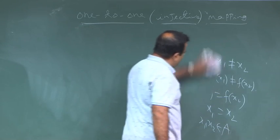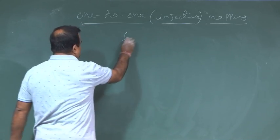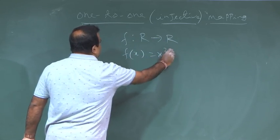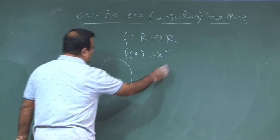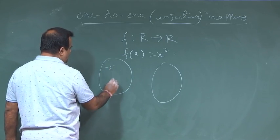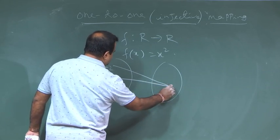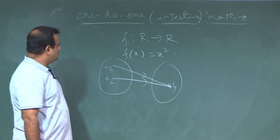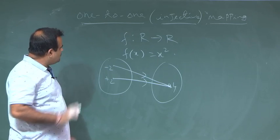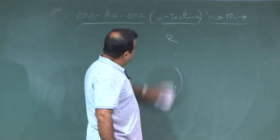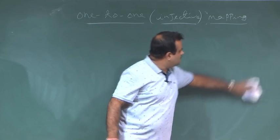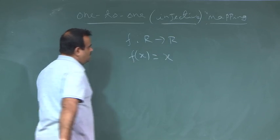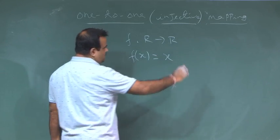The function f: ℝ → ℝ, f(x) = x² is not one-to-one, because any negative number and its corresponding positive number both map to the same square — for example, −2 and +2 both map to 4. However, f: ℝ → ℝ, f(x) = x is a one-to-one function because every element maps to itself.